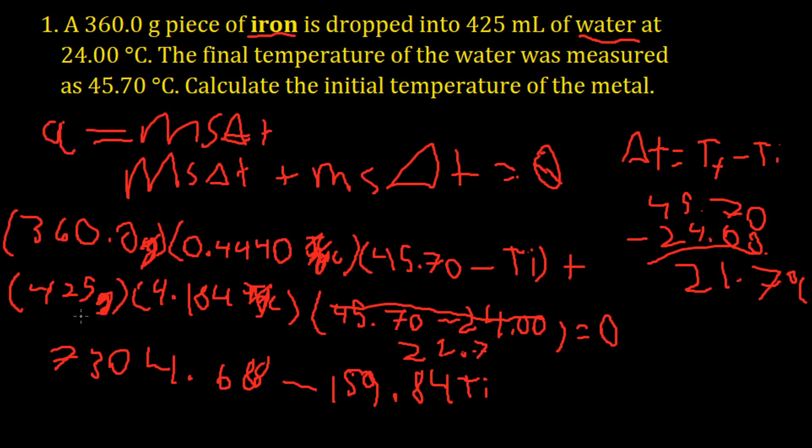And then finally, you multiply for the water, which is 425 times 4.184 times 21.7, which is 38,586.94. Now, with how our problem is set up, ms delta t plus ms delta t equals 0, we need to remember that this all right here needs to equal 0.